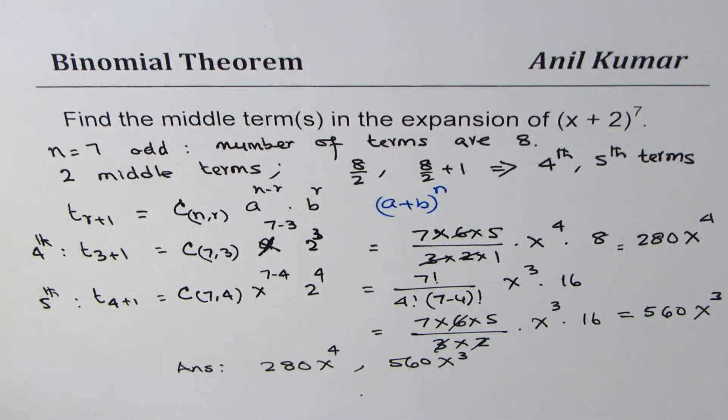So that is how you get two middle terms when the power is an odd number, as in this case 7.